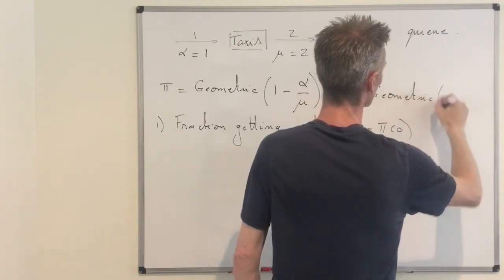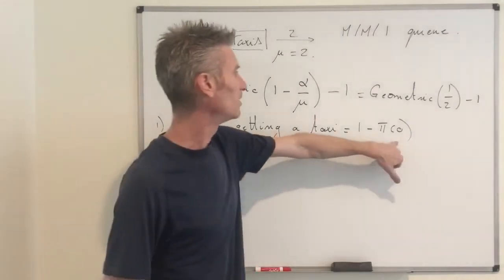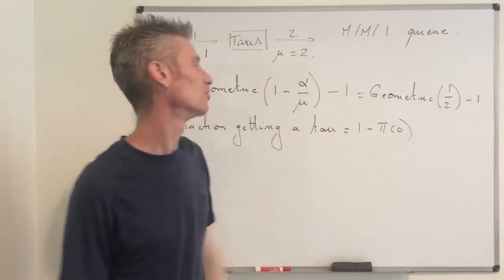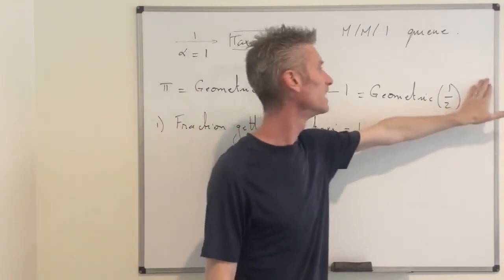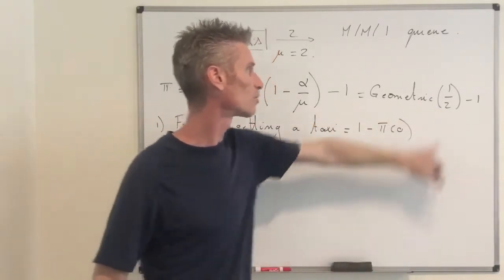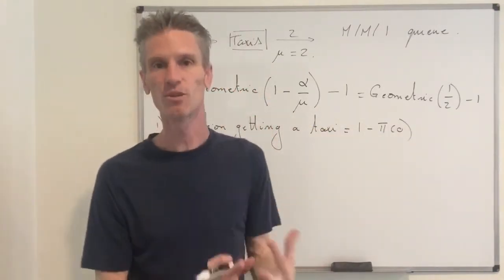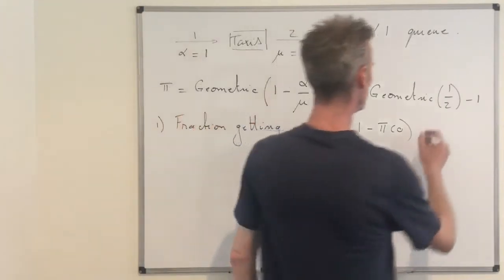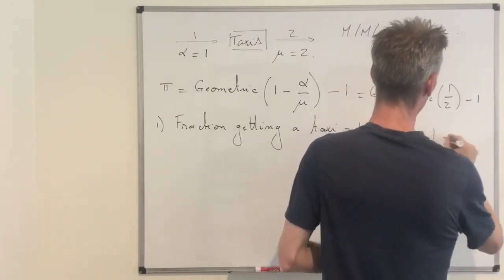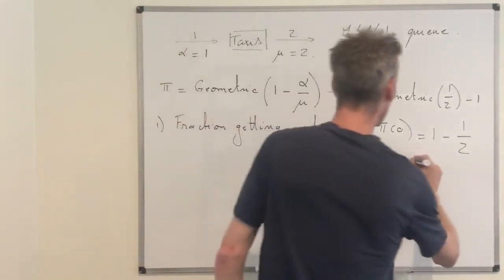Let's compute pi zero. We have alpha over mu equal to one half, and one minus one half is one half. So we have a shifted geometric random variable with parameter one half. The probability that this shifted geometric equals zero is exactly the probability that the underlying geometric equals one, which is the probability of a success on the first trial — that's one half. So pi zero equals one half, and the fraction of customers getting a taxi is one minus one half, which equals one half exactly.